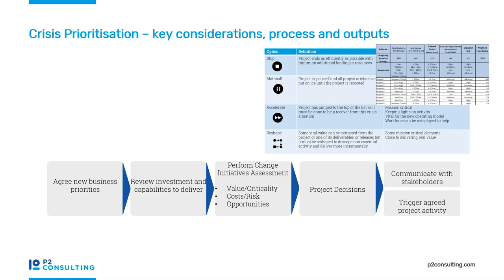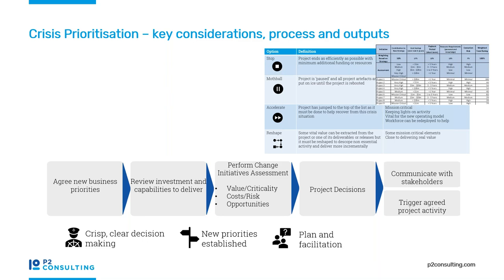A few key things to remember during crisis prioritisation: we need really strong leadership and crisp, clear decision making. When decisions are provided, they need to be based clearly on the new priorities and communicated effectively. Planning and facilitating all of this is really important, and we're doing it in a new virtual world — there are plenty of tools and techniques that can help. Finally, let's remember this is a change management activity. We need to understand the potential resistance to change and how important leadership and communication is in making sure everyone knows what's going on and what the outputs are.